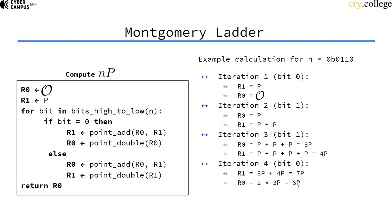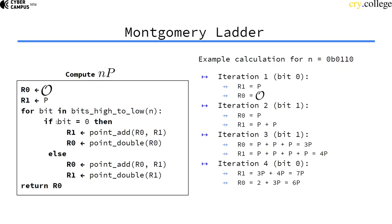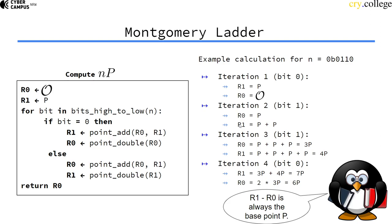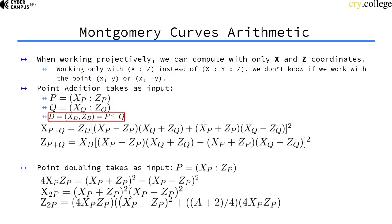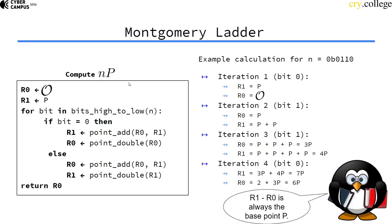So why did I go through this example now? Because we wanted to know where this difference comes from. Well, if you pay attention, you will see that actually R0 is always R1 minus P. So the difference between R1 and R0 is always the base point P. So this difference in our formula here is just always the base point that we use for scalar multiplication.